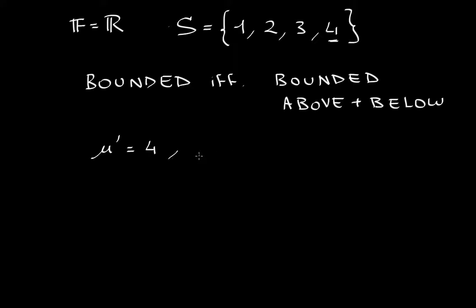If I was to choose another u, let's make a u double prime, 100 would be another upper bound, right? Because everything is less than 100 in our set. Every element is less than 100.